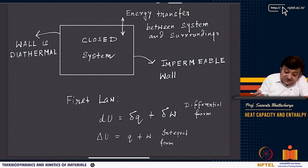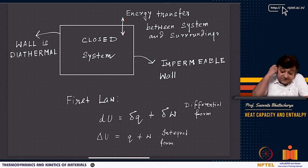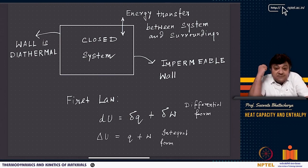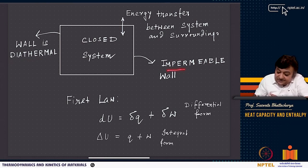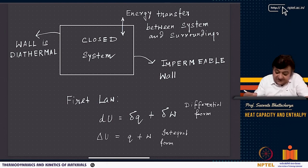For a closed system, energy transfer between the system and surroundings is allowed. The wall is diathermal, meaning it allows heat transfer and exchange with the surroundings, but it is impermeable — it does not allow exchange of matter. For closed systems, this is the first law.